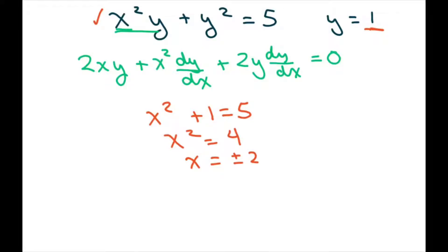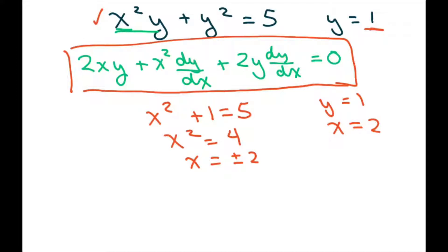Since you have that, we can plug in our x and y values to find dy/dx. So for y = 1 and x = positive 2, I'm just going to plug it into here. So when you plug in 2 for x and 1 for y, you get 2(2)(1) + 2² dy/dx + 2(1) dy/dx.